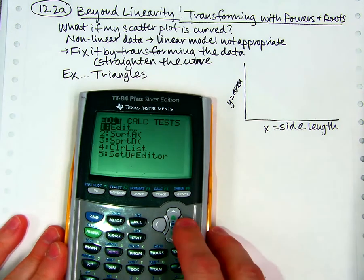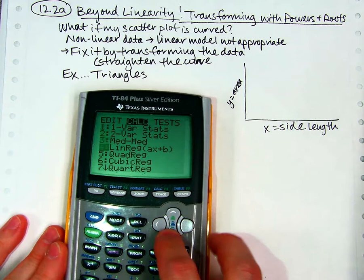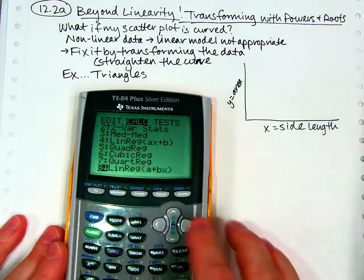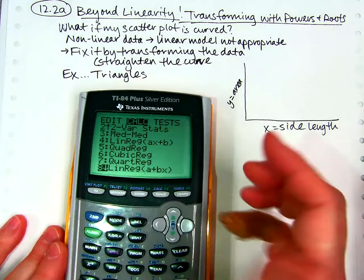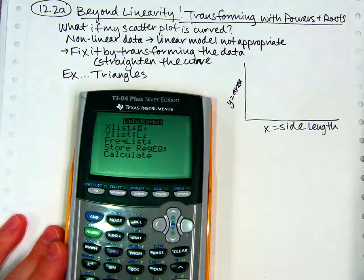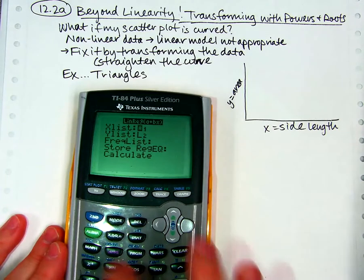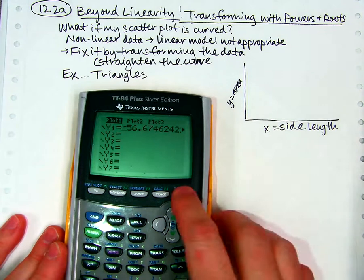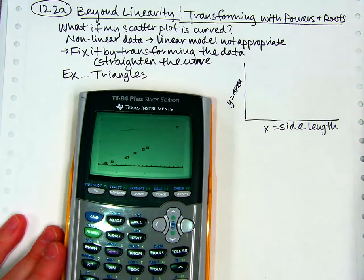And so I'm going to tell you that's actually kind of common for it to look straight until you do some other things to it. One of the things we could do is we could go to stat calc. Actually, we don't want one variable stats. We want Lin-Reg, which is 8, and we could tell it to find a regression equation and all that. I actually already did that, and I put it in my Y equals screen so it will graph along with the plot that I just showed you.